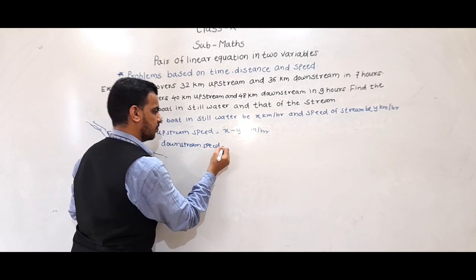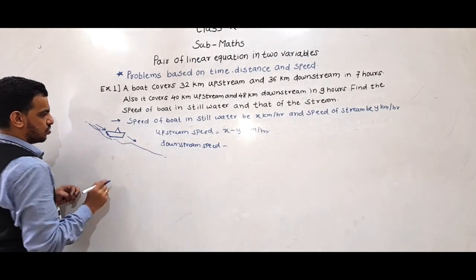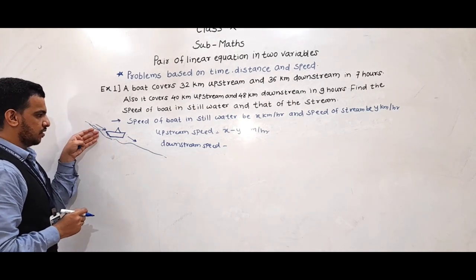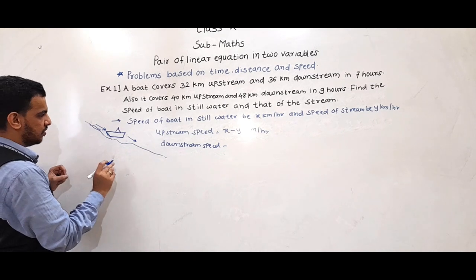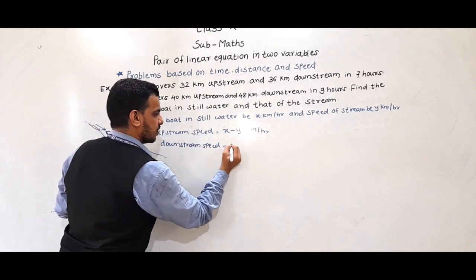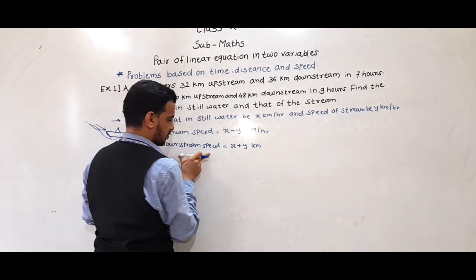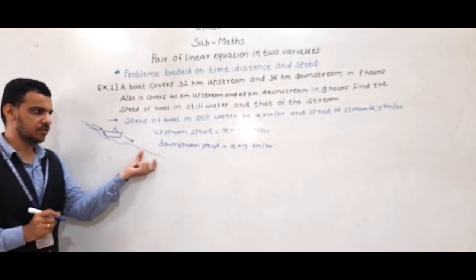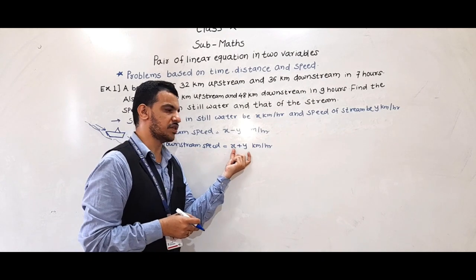Similarly, when the boat goes downstream — meaning in the same direction as the stream — the boat and the stream go in the same direction. So their speeds add up, and the downstream speed is x plus y km per hour.